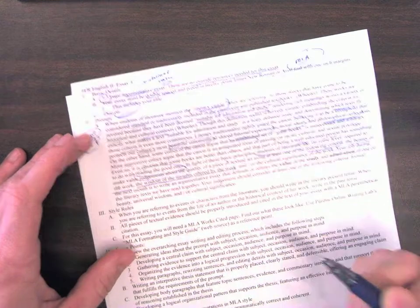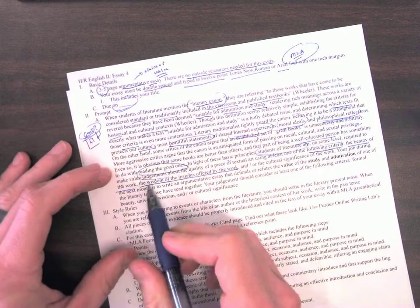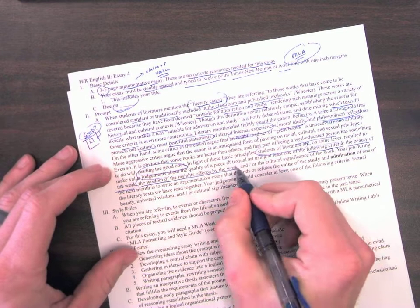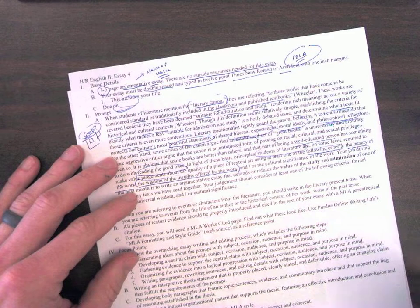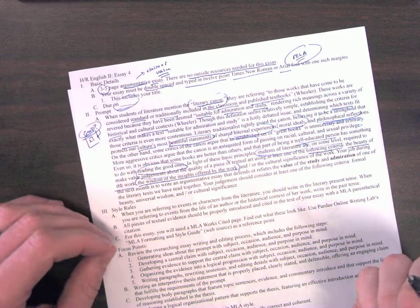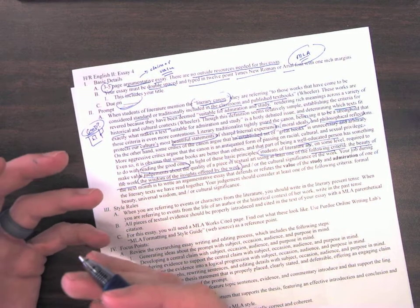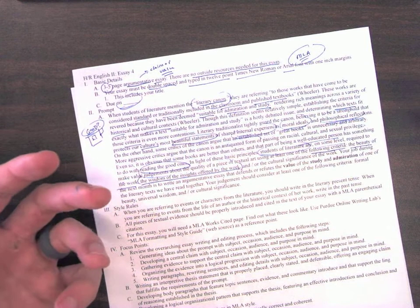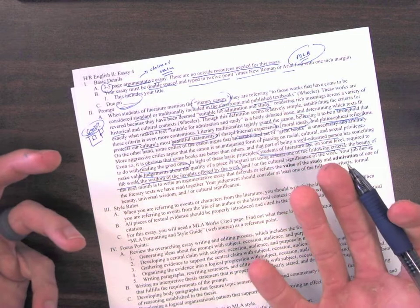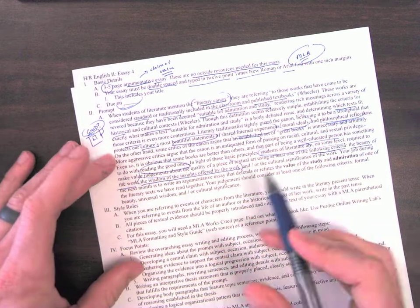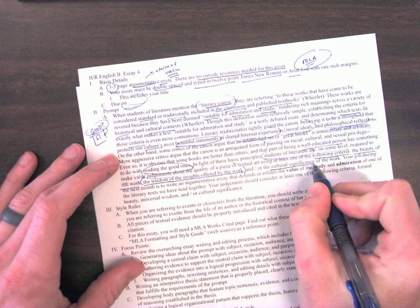The wisdom of the insights offered by the work. So here, I often think about a text like Frankenstein, which is not only a very beautiful work, but it offers something that is distinctly valuable to a young student. Thinking about what it means to both be in need of intimacy and love and respect, and also to be responsible for giving intimacy, love, and respect. And or, last criteria would be the cultural significance of the work.